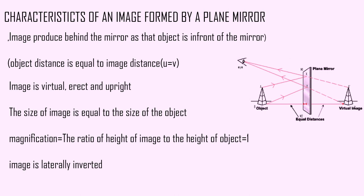Also, the size of the object is equal to the size of the image, which means magnification equals 1. The magnification formula is the ratio of height of the image to height of the object, and that is equal to 1 because the size of the image equals the size of the object. The image is also laterally inverted — left and right are reversed. This covers all the characteristics of an image formed by a plane mirror.